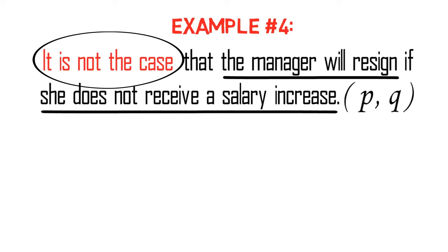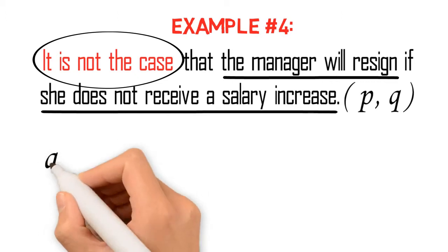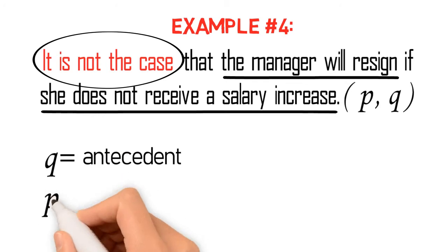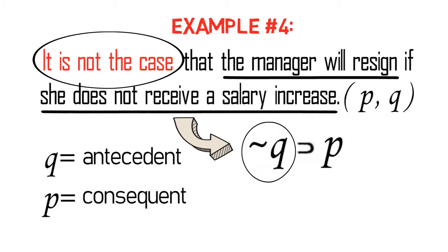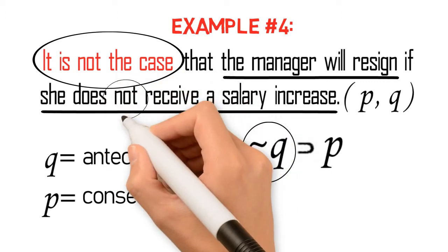As I discussed in one of the previous editions, the variables provided after the proposition represent the propositions in the entire proposition, respectively. And since in this example the antecedent is written after the consequent, then Q must be our antecedent and P our consequent. Hence, we initially come up with the following symbol. Please note that Q is negated because it is clearly specified in the proposition — in other words, the proposition contains a negation sign: 'not.'